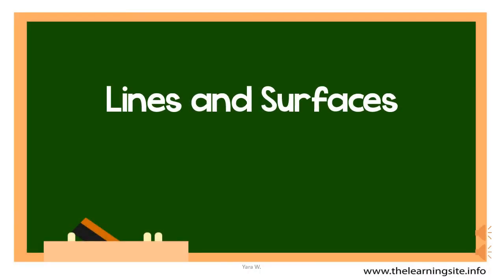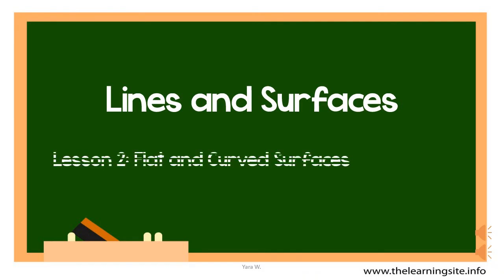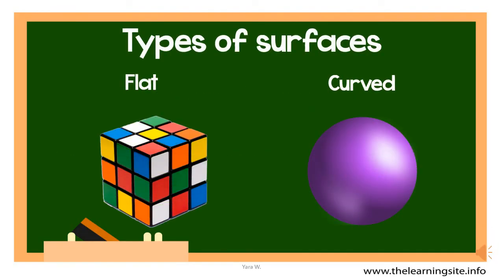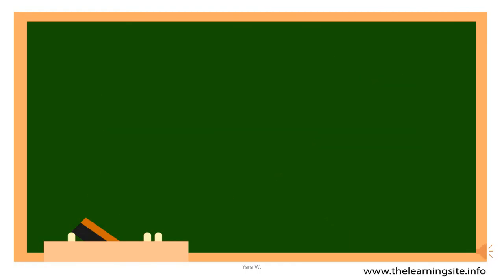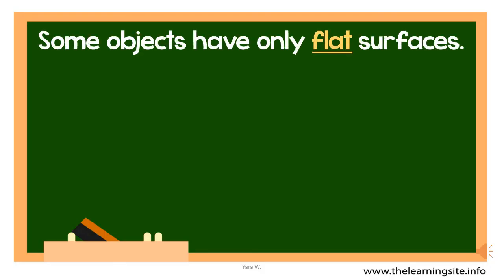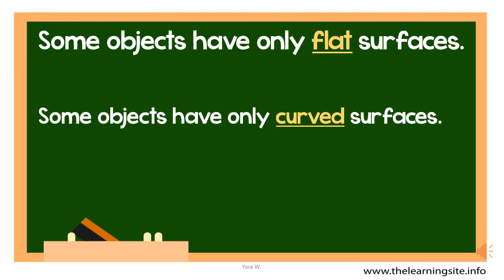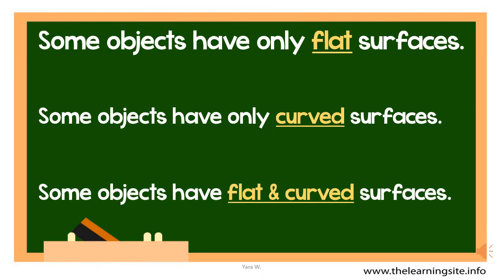Dear grade 2 students, this is the chapter about lines and surfaces. In this lesson we will continue talking about flat and curved surfaces. In the previous lesson we discussed the types of surfaces an object could have — it could either be flat or curved. We also said that objects can have only flat, only curved, or both flat and curved surfaces. In this lesson we will learn how these surfaces behave.